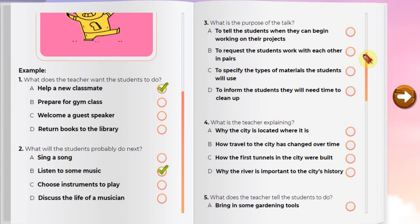Number four. Listen to a teacher talking to a history class. When we take our class trip into the city this week, we'll be driving through a tunnel that will take us under a river. It's so easy to take a train or car into the city today using tunnels that we don't think much about the fact that we're crossing a river. But in the city's early days, the only way to get to the city was by boat. I want you to keep this in mind as we learn more about the city's history. What is the teacher explaining?